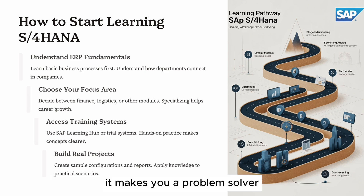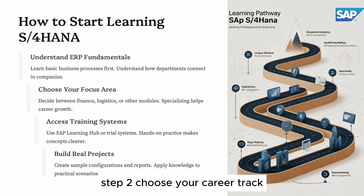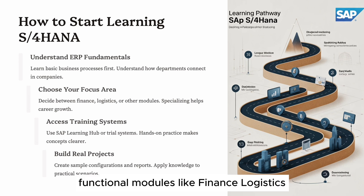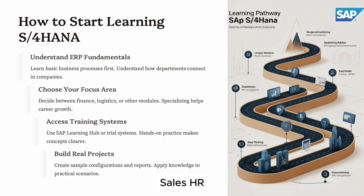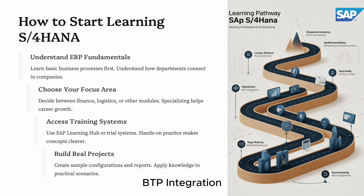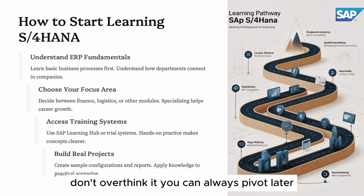Step two — choose your career track. There are two main paths: functional, covering modules like finance, logistics, sales, and HR; or technical, covering ABAP, Fiori UI5, and BTP integration. Start with what interests you. Don't overthink it — you can always pivot later.